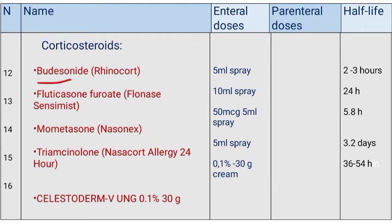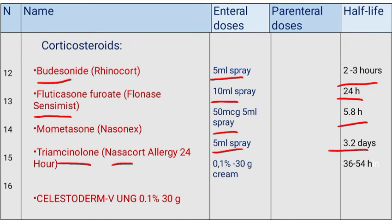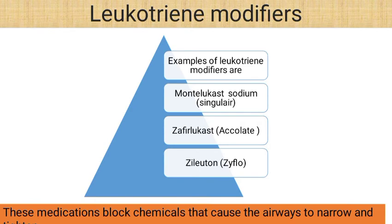Corticosteroid drugs include: Budesonide (trade name Rhinocort), enteral doses 5 ml spray, half-life 2–3 hours. Fluticasone furoate (trade name Flonase Sensimist), enteral doses 10 ml spray, half-life ~24 hours. Mometasone (trade name Nasonex), enteral doses 50 mcg/5 ml spray, half-life ~5.8 hours. Mesocort Allergy 24-hour, enteral doses 5 ml spray, half-life ~3.2 days. Clobetasol ointment 0.1% 30 g cream, half-life 36–54 hours. Leukotriene modifier examples include montelukast (Singulair), zafirlukast (Accolate), and zileuton (Zyflo); these block chemicals that cause airways to narrow and tighten.